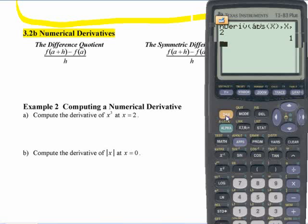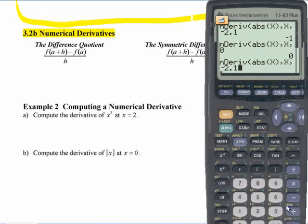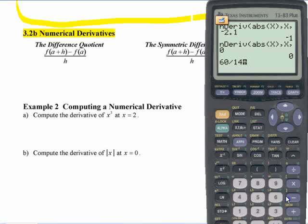But if you want the slope now at a different point, like negative 2.1, it gives us negative 1. If you tell it to calculate it at zero, remember that this is a good guess as to what it's doing.